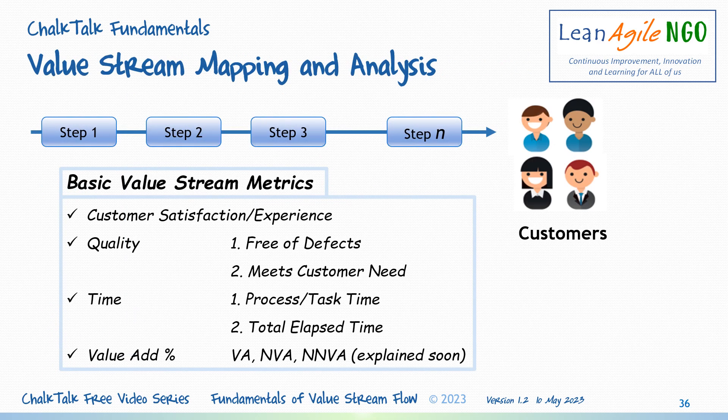When you want to improve something, you have to measure it. Here's a list of basic metrics used to analyze the improvement of a value stream: customer satisfaction, quality, speed, and value-added activity percentage. Once these metrics are in place, the team can use them to guide target setting and measure gaps between where they are and where they want to be, guide problem prioritization, and pinpoint visual alerts and notifications — flying a red flag to quickly call attention when an important process starts to tip so they can swarm the problem and prevent it from getting out of control.